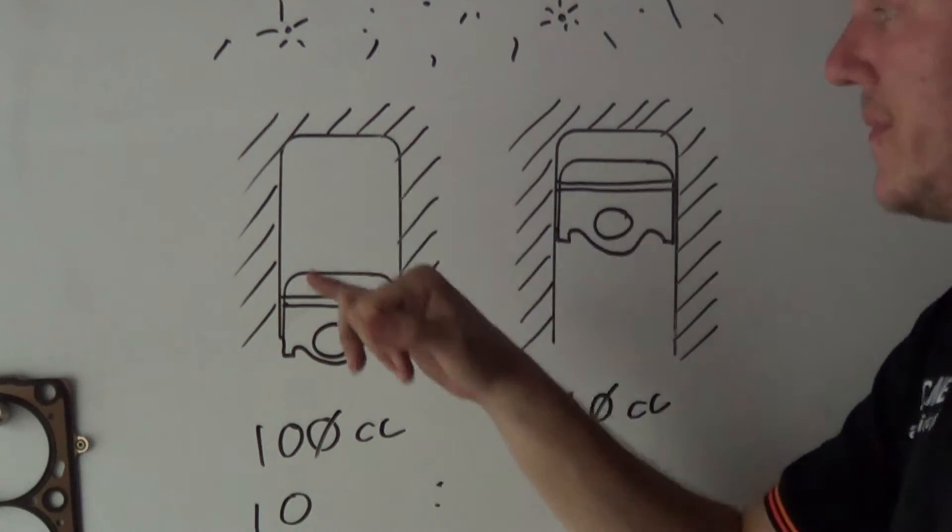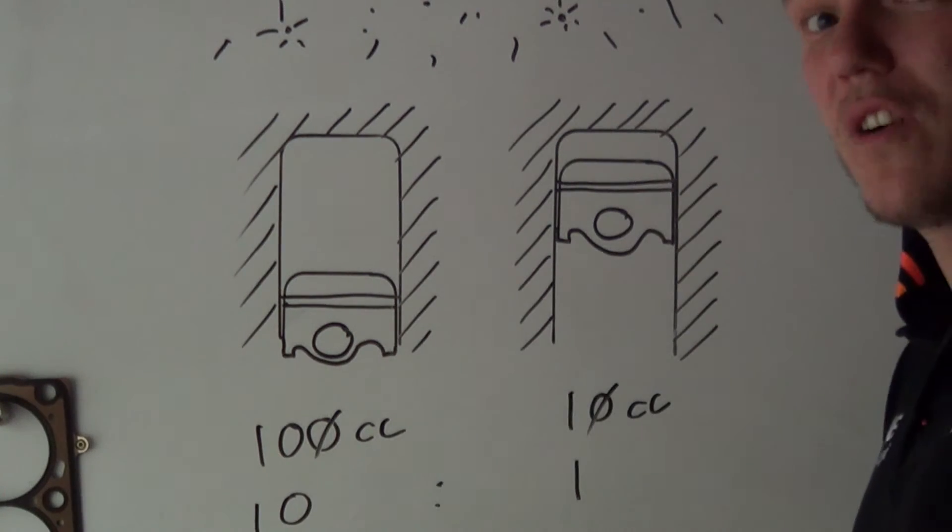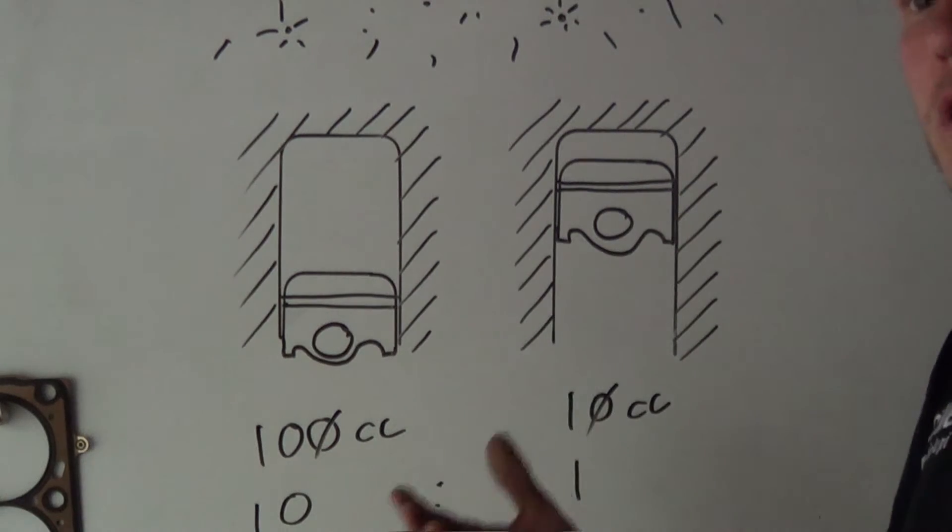You've got your oxygen in here, you have your fuel, you have heat. That's a fire triangle, all finished off nicely. Ignition occurs, and this is called knock.